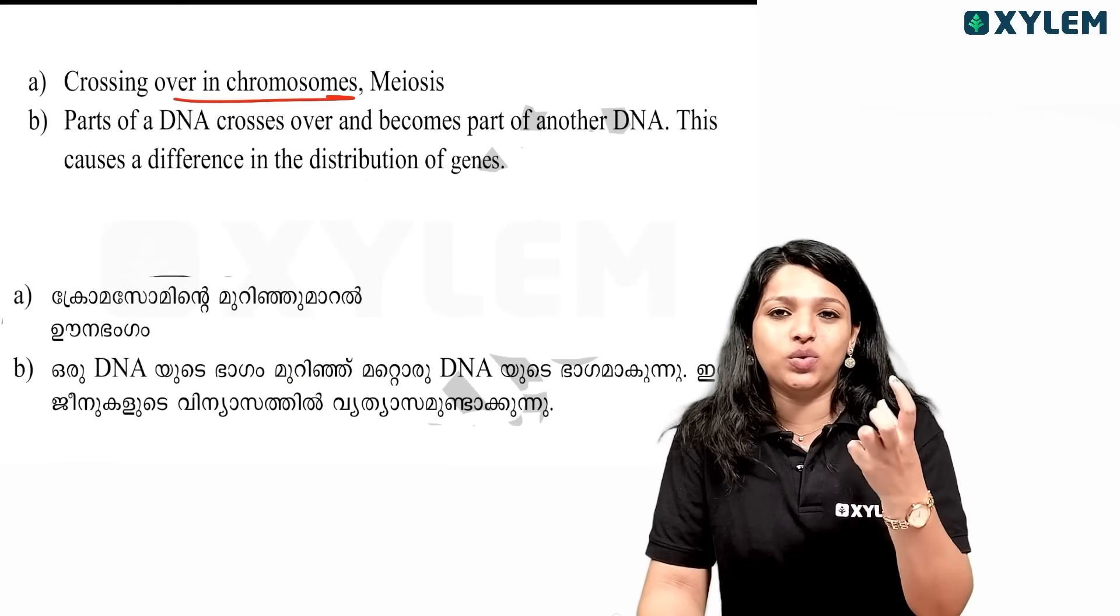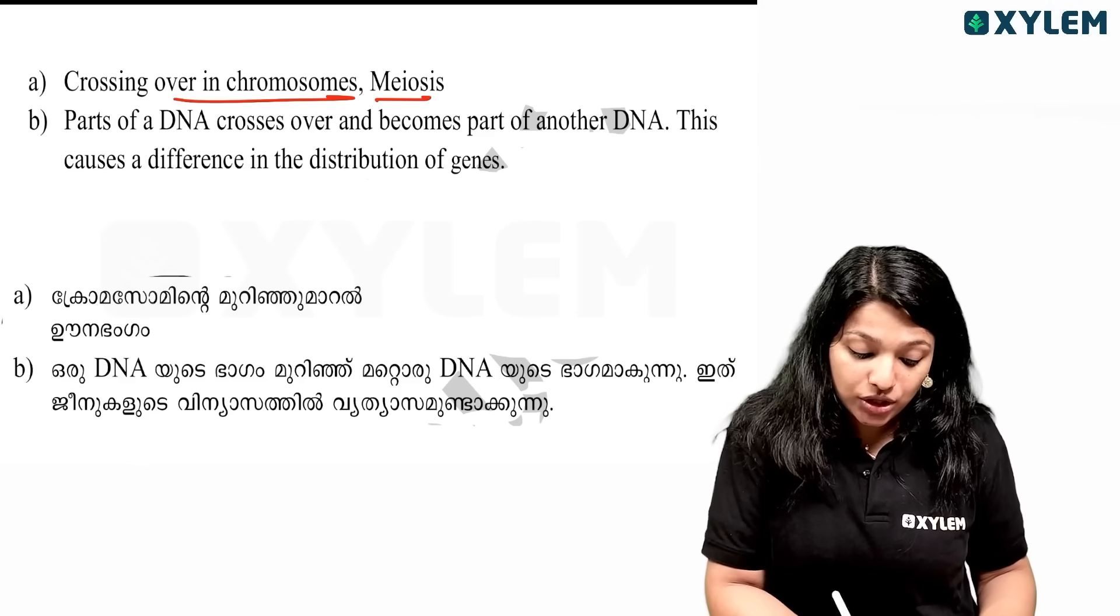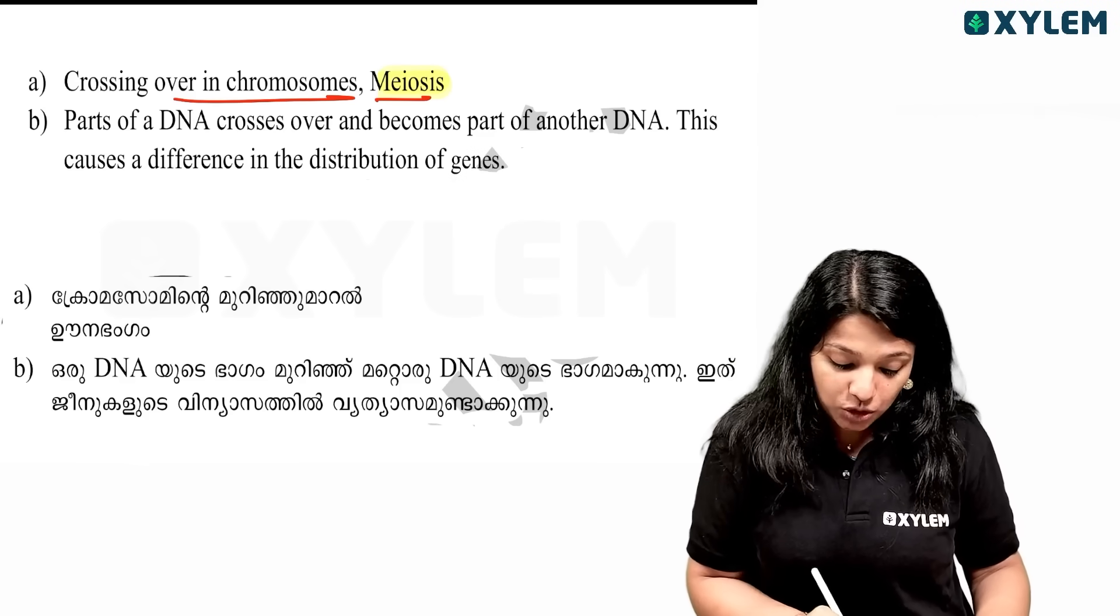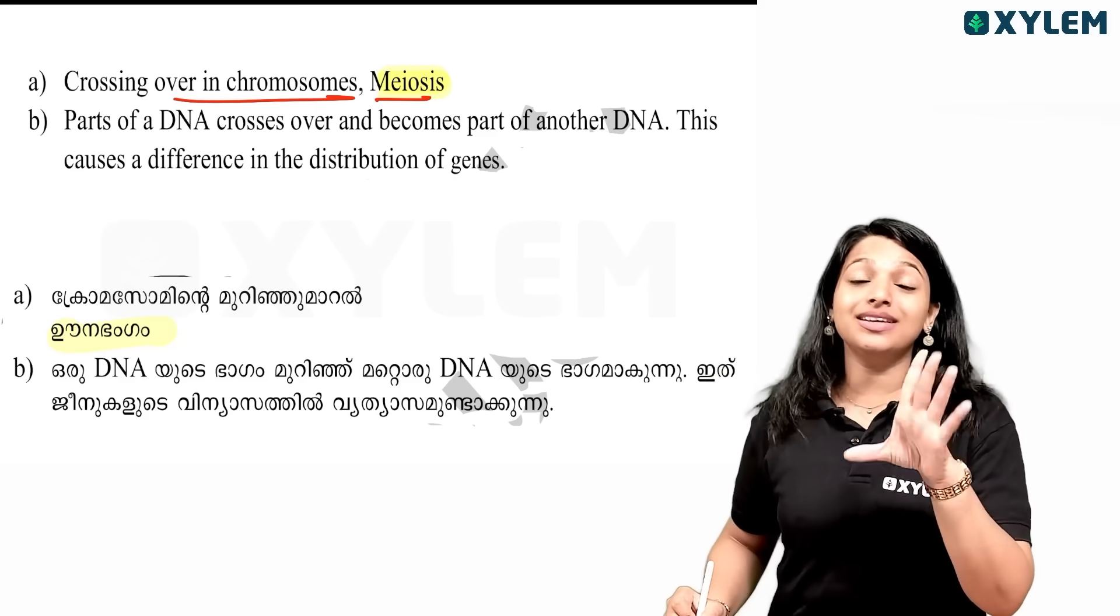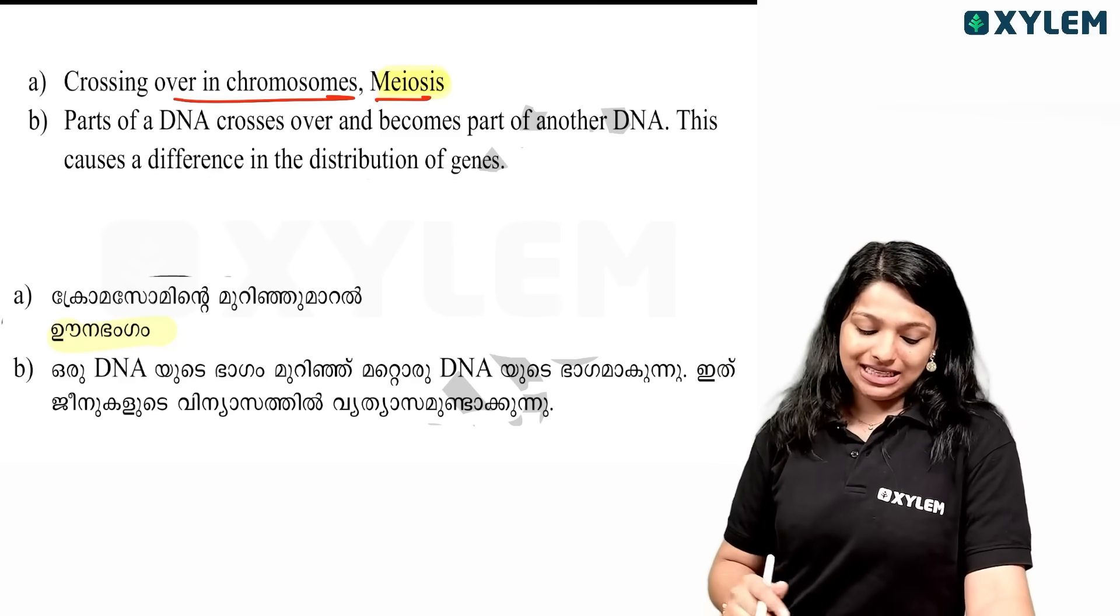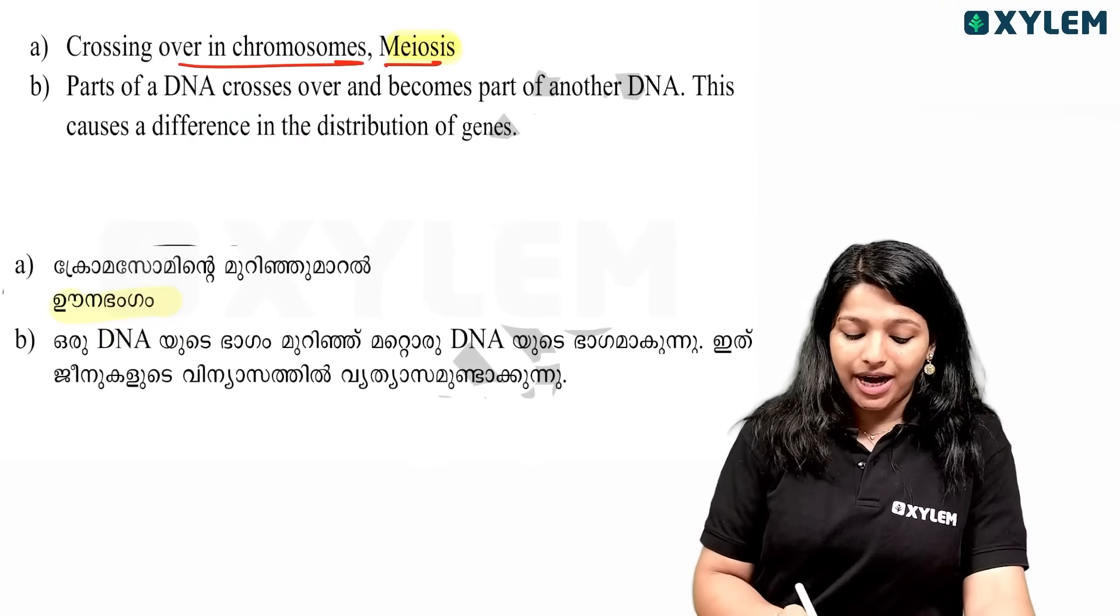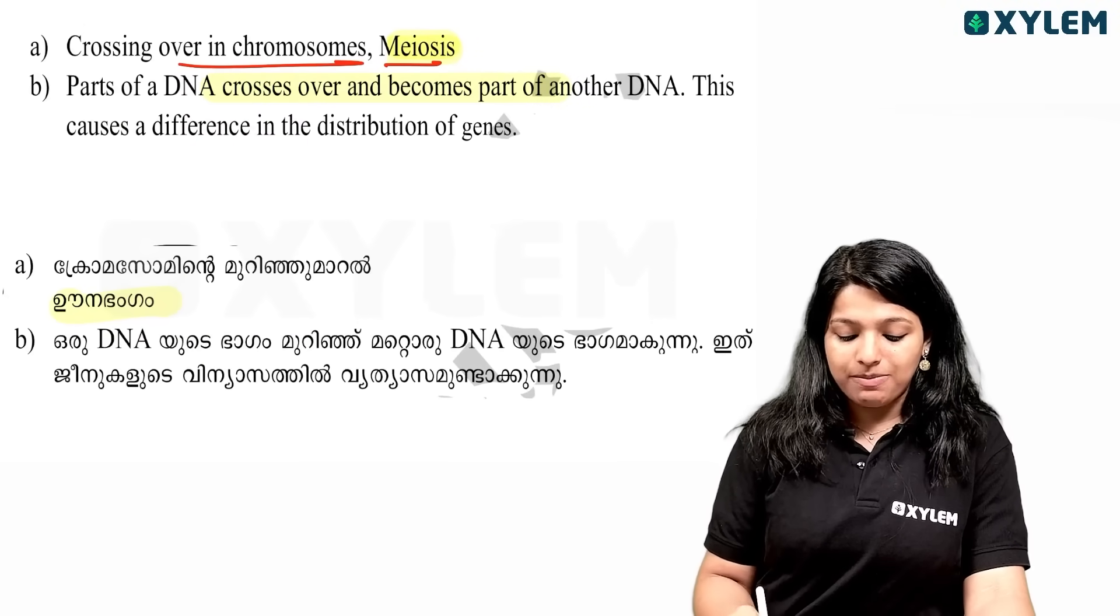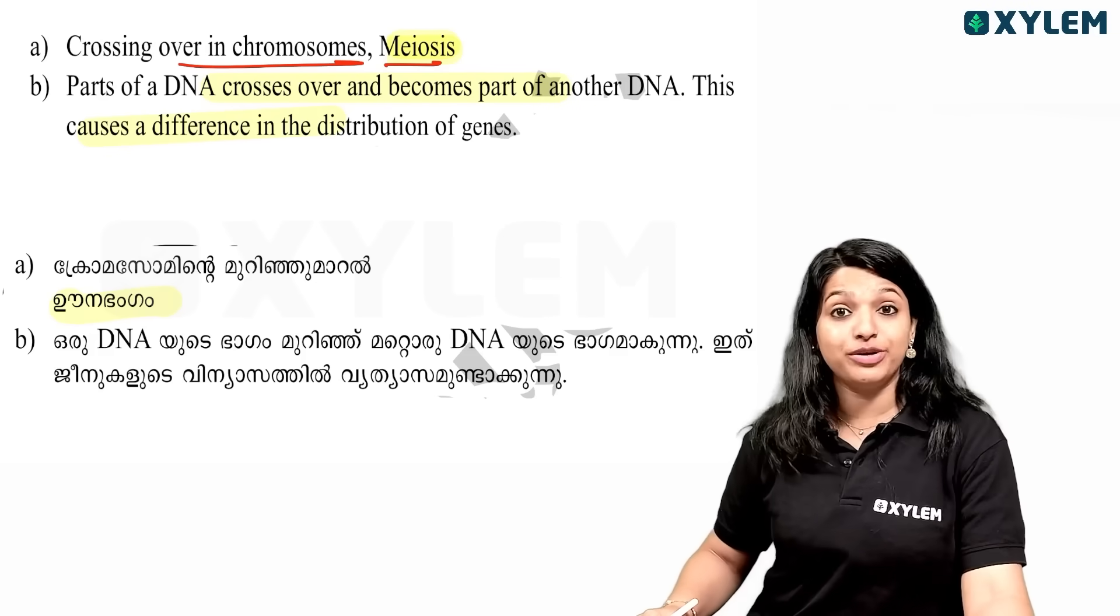This is the crossing over process. Parts of a DNA cross over and become part of another DNA. This causes a difference in the distribution of genes.